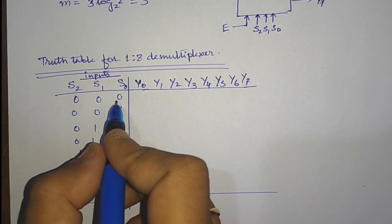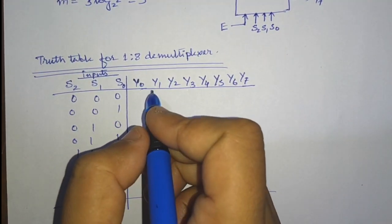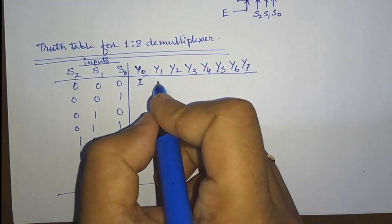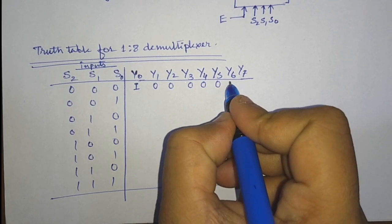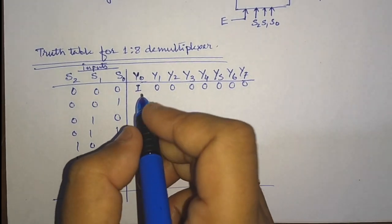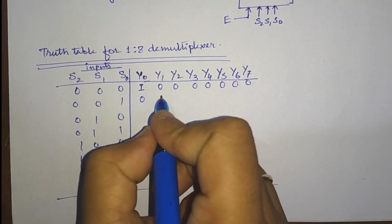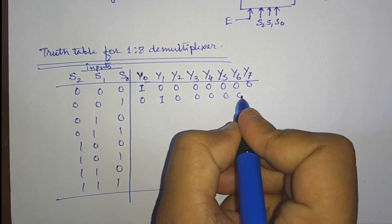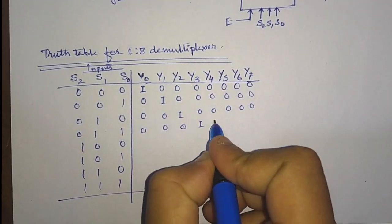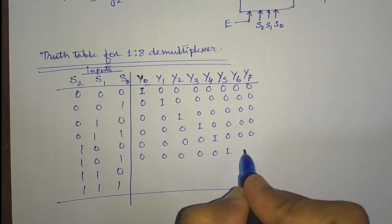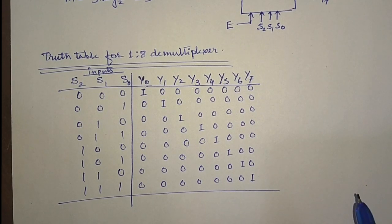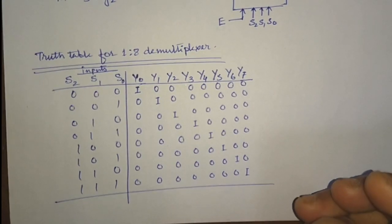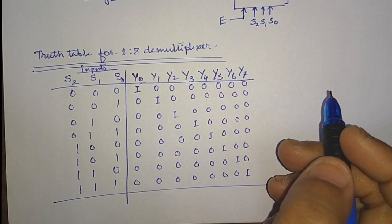When the select lines are 0 0 0, Y0 will be selected and receives input i; all other outputs receive 0. When the select lines are 0 0 1, Y1 receives i and all others are 0. From this truth table we can see that in all cases E = 1, so while designing the logic circuit we must include an enable line that is high whenever the circuit is working.